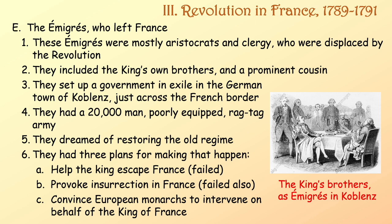The émigrés had left France. They were mostly aristocrats and clergy displaced by the revolution, and they included the king's own brothers and a prominent cousin. They set up a government in exile in the German town of Koblenz, just across the French border, with a 20,000-man, poorly equipped, ragtag army, and they dreamed of restoring the old regime. They had three plans: number one, help the king escape France — which failed; number two, provoke insurrection in France — also failing; and number three, convince European monarchs to intervene on behalf of the king of France.